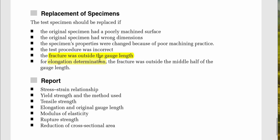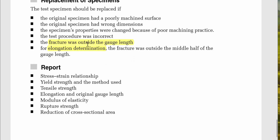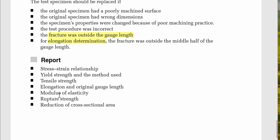The test specimen should be replaced if: the original specimen had a poorly machined surface; the original specimen had wrong dimensions; the specimen's properties were changed due to poor machining practice; the test procedure was incorrect; or the fracture occurred outside the gauge length, or for elongation determination, outside the middle half of the gauge length.